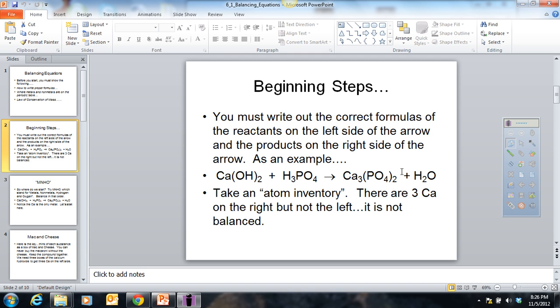Take an atom inventory. Notice over here, there's three calciums. Over here, there's only one calcium. Something happened. There are two calciums that just evaporated. This violates the law of conservation of mass. It's not balanced. So how do we make sure to get the right number of atoms on both sides?